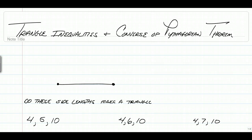Alright everybody, let's do this. Longo is here to talk to you a little bit about the triangle inequalities and the converse of the Pythagorean theorem. The triangle inequalities is just going to tell us if three random side lengths will make a triangle. The converse of the Pythagorean theorem is going to tell us if it's a right triangle, an acute triangle, or an obtuse triangle. So we've got two separate parts to this lesson.